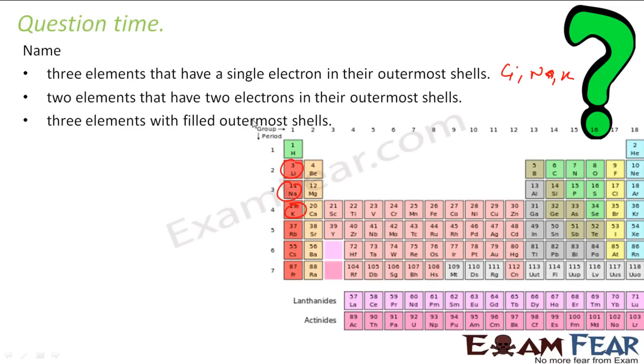Two elements that have two electrons in the outermost shell. So these have two electrons. I asked for two. I can say magnesium, calcium.